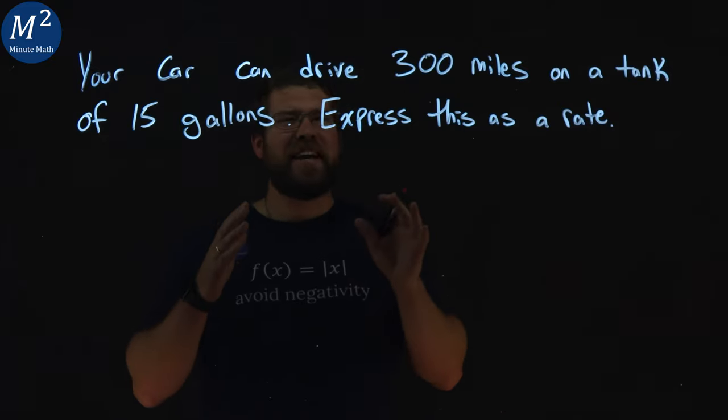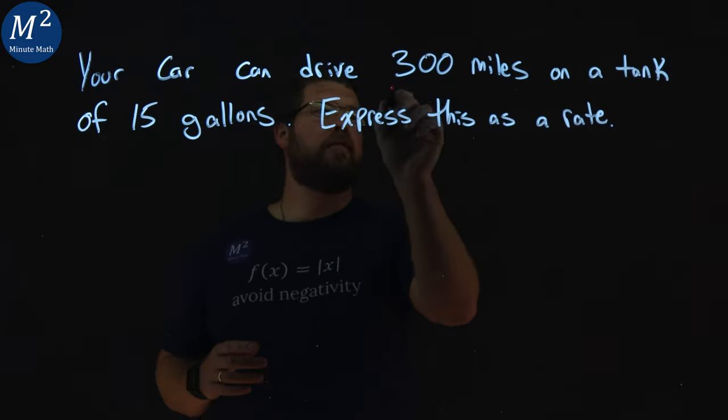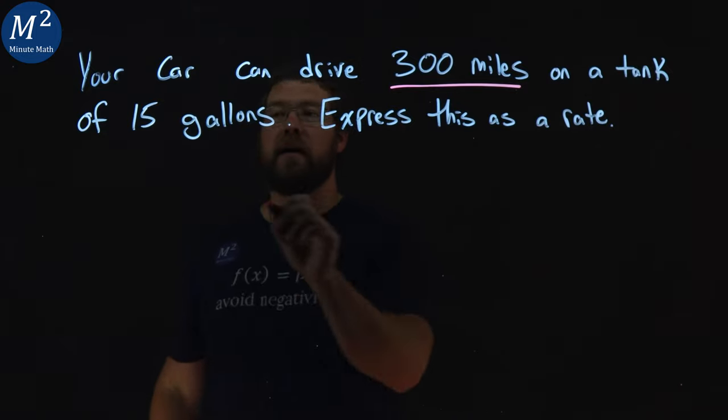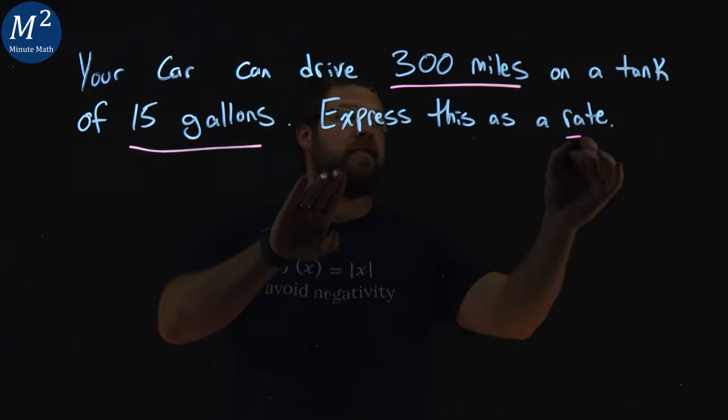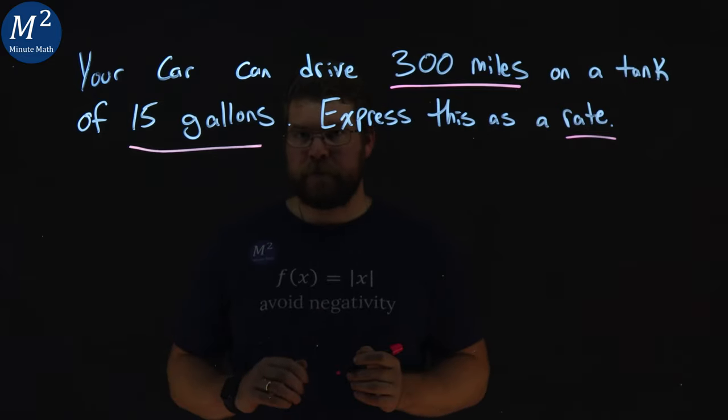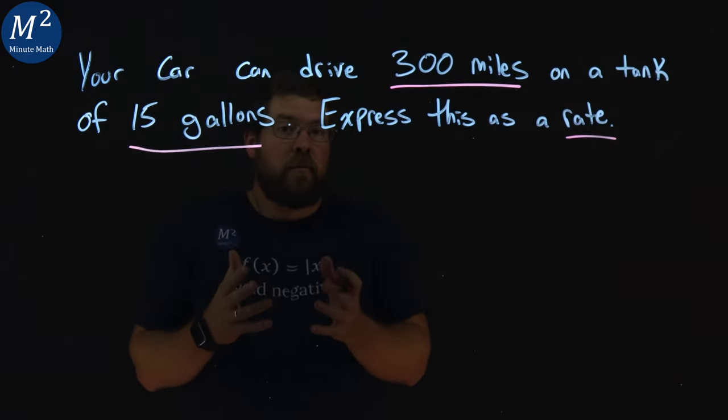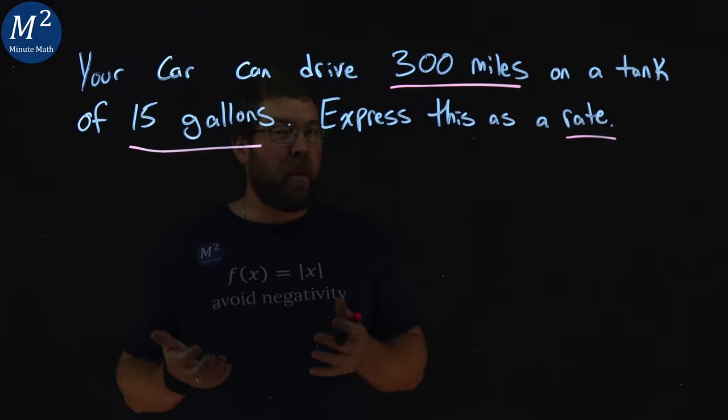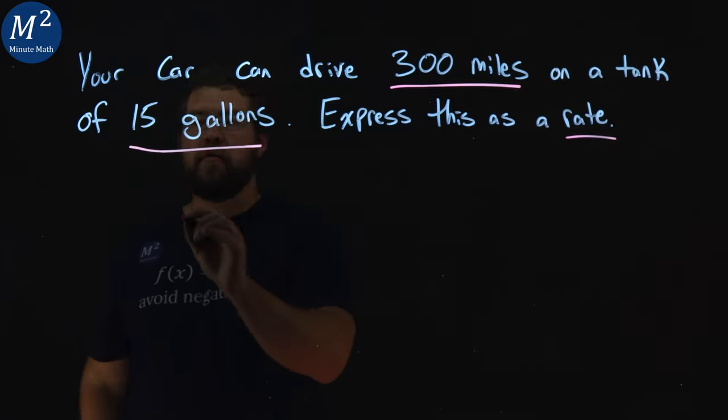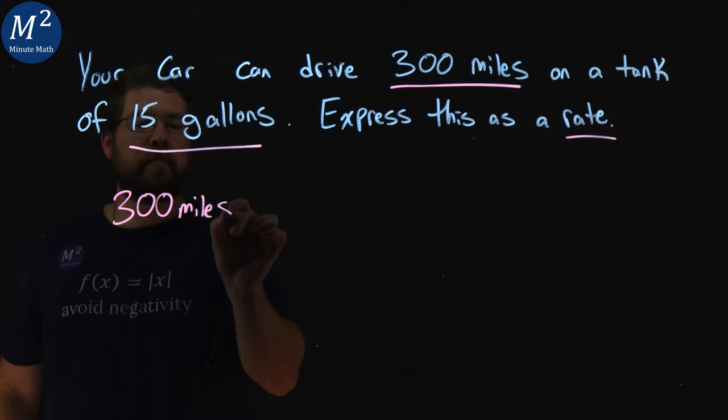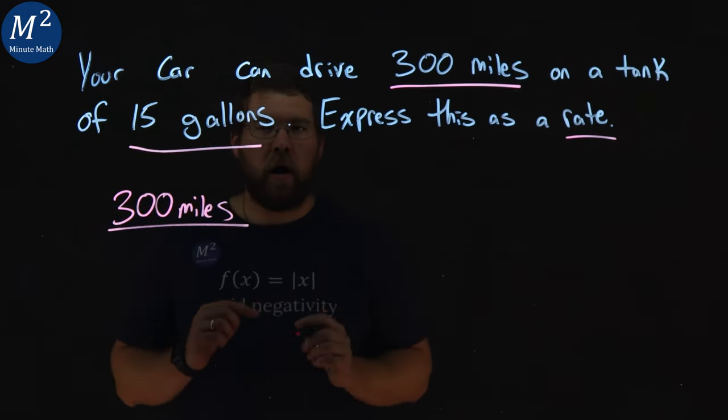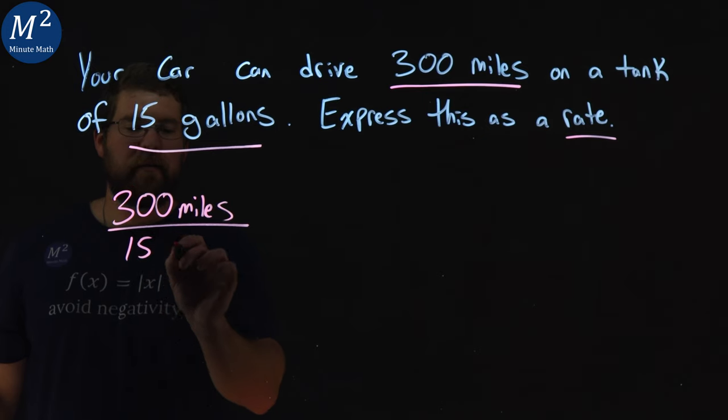First, we want to get our key parts here. We can drive 300 miles on a tank of 15 gallons, and we can express this as a rate. Well, first, we want to see what our rate's going to be by making a proportion here. So, we can drive 300 miles on 15 gallons.